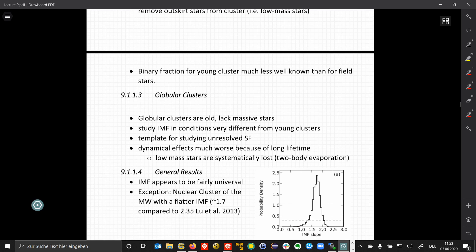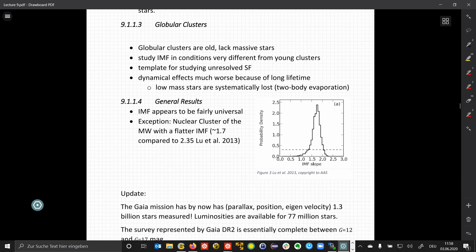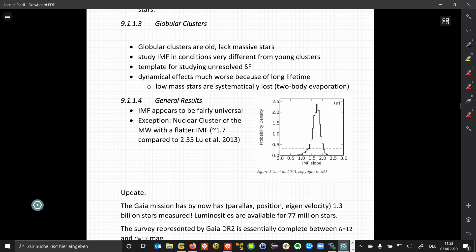We can also look at much older objects, globular clusters. They are old and therefore lack the massive stars. But we have a large population of low mass stars that still are on the main sequence, so we can study the IMF under conditions that are very different from young clusters. And they offer a good template for studying unresolved star formation. Due to their long lifetime, all the dynamical effects are much worse because stars had much more time to travel away or to be removed from the cluster.